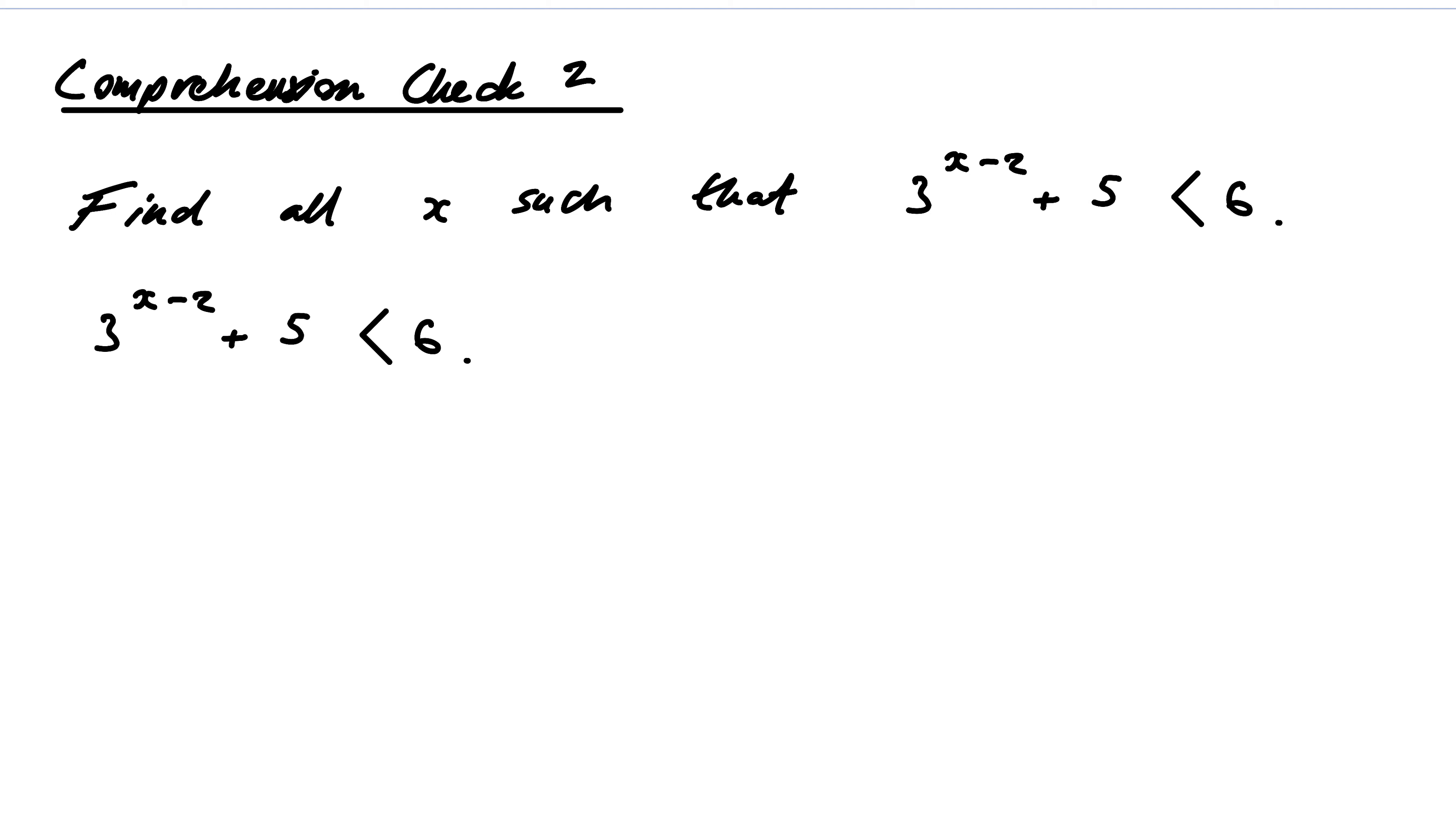Let's do some really simple manipulations. If and only if, take away 5 from both sides, it doesn't alter the inequality. It would be 3^(x-2) less than 6 minus 5, which is equal to 1.